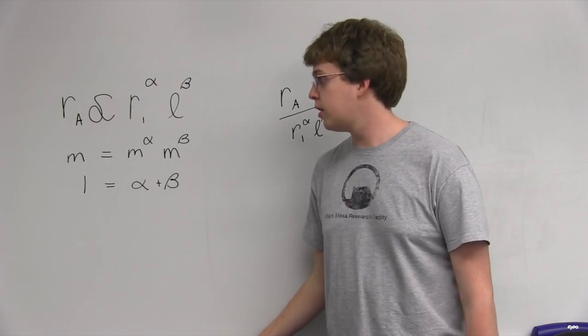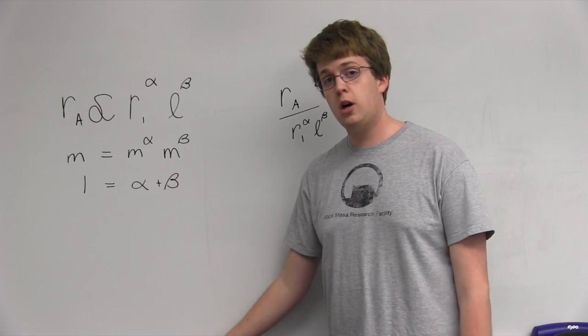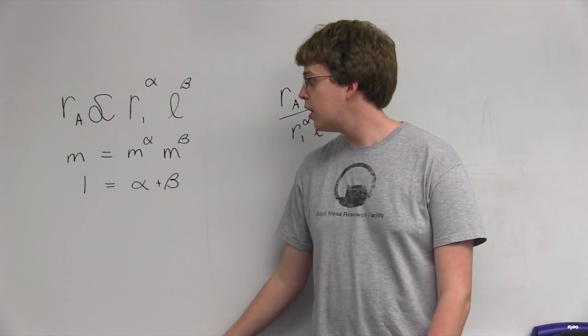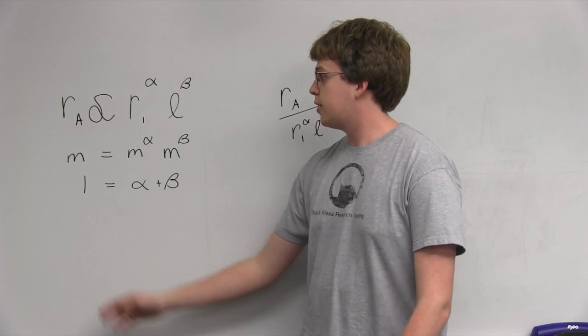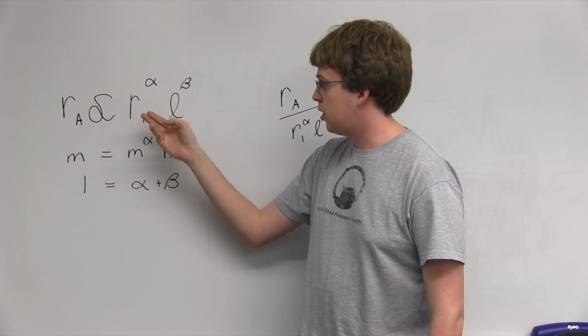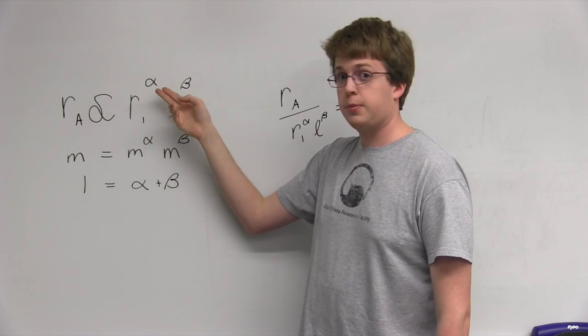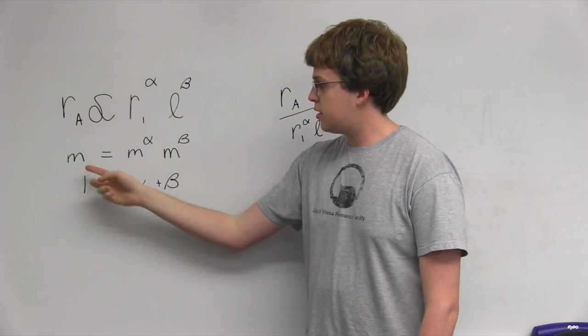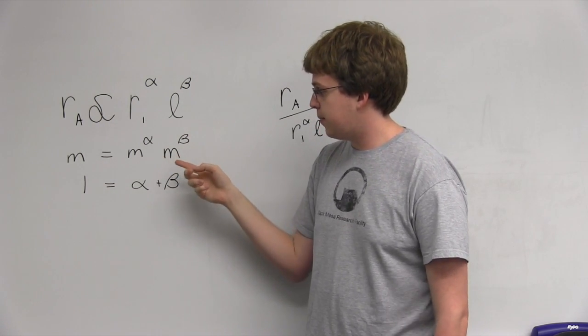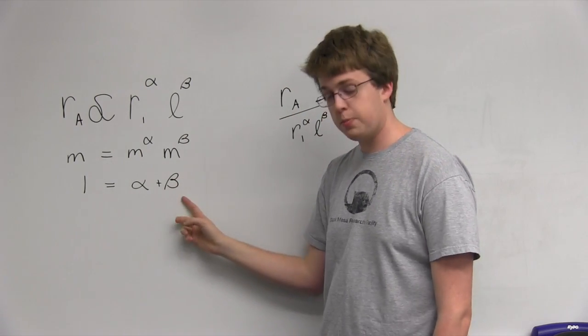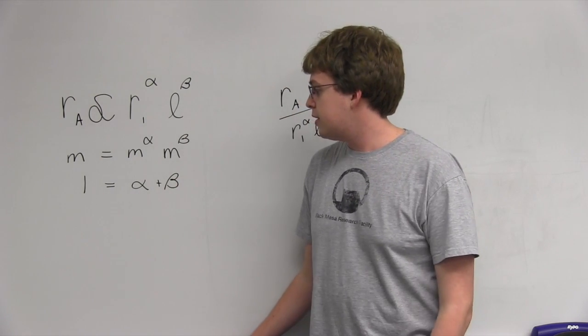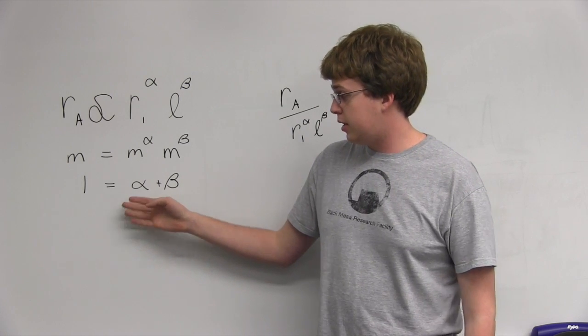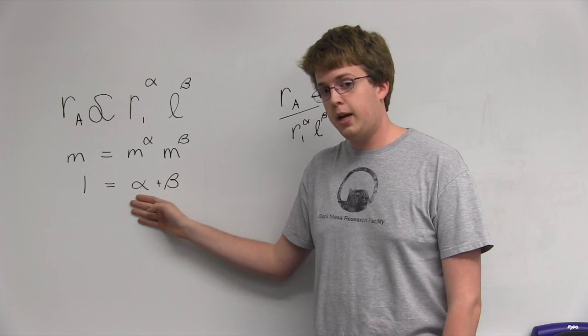Therefore, to figure out the relationship between RA and those we wanted to look at the units, we should be able to say that RA is proportionate to R1 to some variable alpha times L to some variable beta. Since all three have units of meters, we get that one should equal alpha plus beta. Unfortunately, this is the best we can say right now as far as the relationship between alpha and beta.